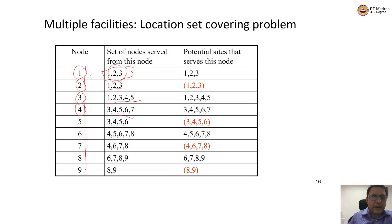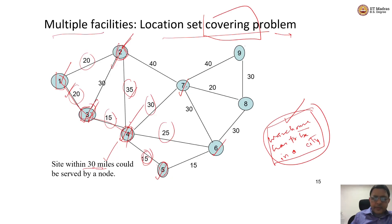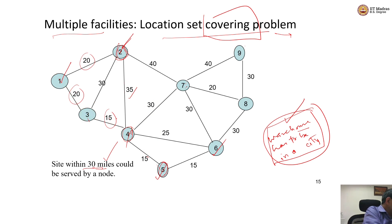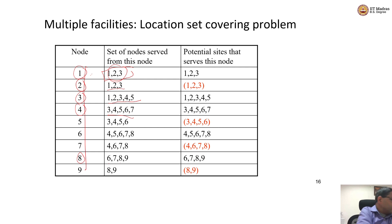Let us take a look at node 8. Having a facility at node 8 will definitely serve node 6, yes, but not node 5. So it serves nodes 6, 7, 8, and 9. Let us make sure: having a facility at node 8 will serve 6, 7, 8, and 9.